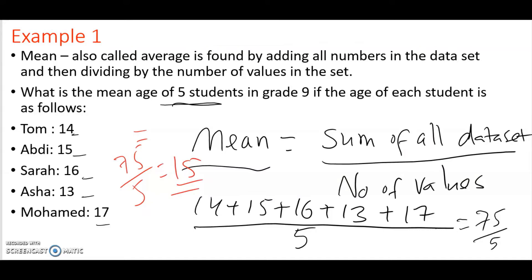So just to recap, always, in order to find the mean of any data set, what you have to do is you add all the numbers in that data set and then divide by how many they are in that data set. Let's do another example.